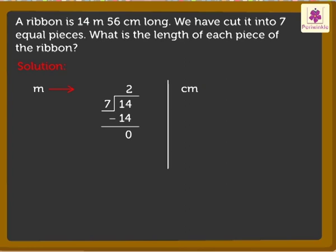Next, let's divide 56 centimeters. Again, as 8 into 7 is equal to 56, we write 8 as the quotient and 56 below the dividend. Again, we get 0 as the remainder. Here, we got the quotient as 8 centimeters.